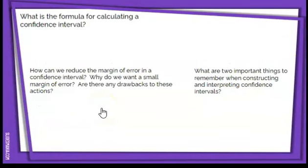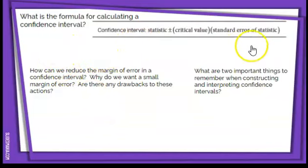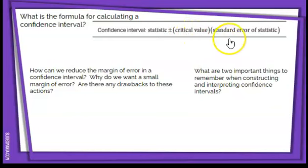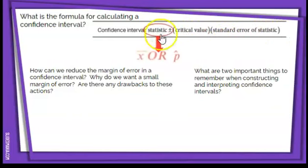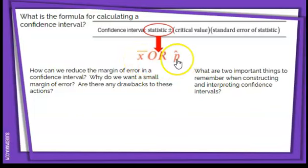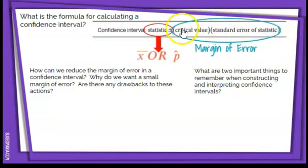What is the formula for calculating a confidence interval? It looks like this — it's straight off your chart. It starts with a statistic, then plus or minus a critical value times the standard error of the statistic. The statistic is your point estimate — it's either going to be x-bar or p-hat, the mean or proportion from a sample. The back end — the product of the critical value and standard error — is your margin of error.